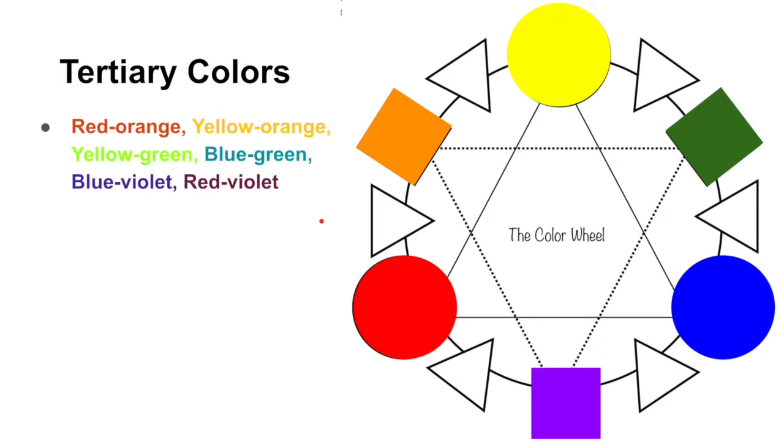And these don't really have any fancy names. There's red-orange, yellow-orange, yellow-green, blue-green, blue-violet, and red-violet. And how do we make them, you might ask?